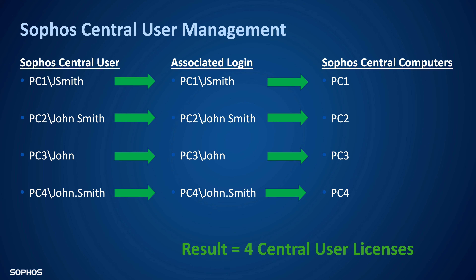So the question is, how do we fix this? How do we get to a single user license? Remember, Sophos Central is licensed by user — one user can have multiple devices. When you utilize Active Directory, Sophos Central automatically knows which computers belong to that Active Directory user because everyone logs in with domain slash username. If we do not have Active Directory, Sophos Central will not be able to automatically consolidate and know that these different variations of John Smith are all the same user. So we're going to have to take those associated logons and consolidate them.